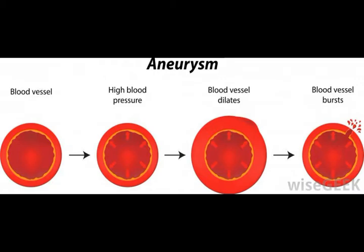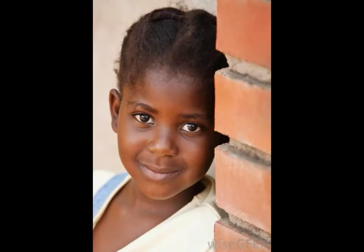Other studies have linked the condition with a possible predilection for blunt injury to the innominate artery, in which a higher occurrence of the condition was discovered during post-injury setting. Currently there is no cure for the bovine arch variant, although theoretical possibilities for non-damaging corrective transplants and grafts have been proposed.